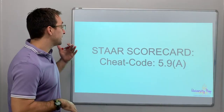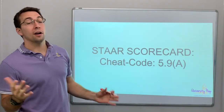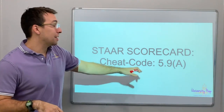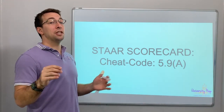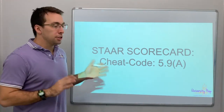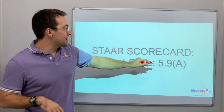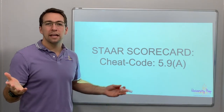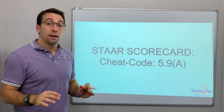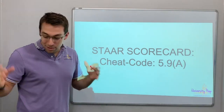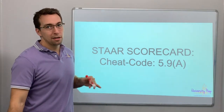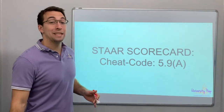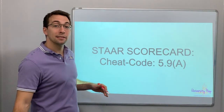Hello everyone. Star Scorecard is a series. 5.9A is the cheat code. So this cheat code 5.9A, B, and C all work together. We're almost done with the series — we're only going to go to 5.10, so it's kind of cool.